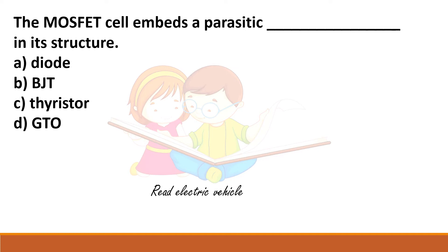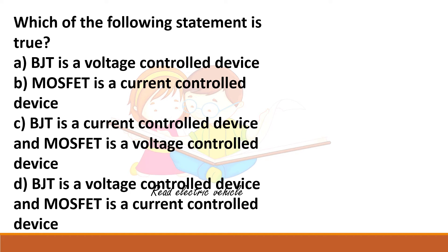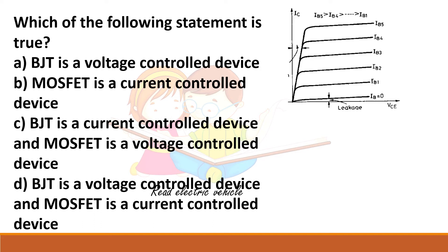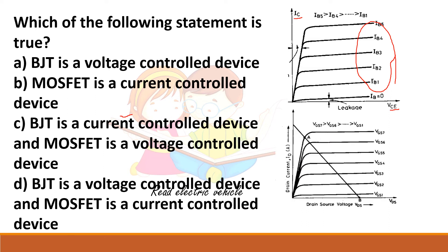The MOSFET cell embeds a parasitic BJT into its structure. Regarding control type: BJT is a current-controlled device, as seen from its output characteristics where base current controls collector current. MOSFET is a voltage-controlled device, as gate-source voltage controls drain current. The correct answer is that BJT is current-controlled and MOSFET is voltage-controlled.